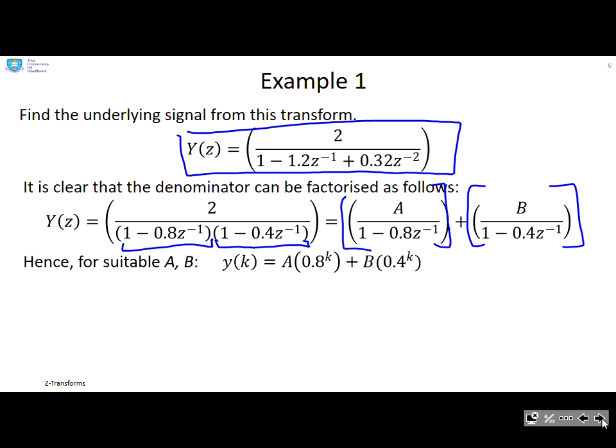Now, by inspection from the table, I can write that y(k) is going to be capital A times 0.8 to the power of k, plus capital B times 0.4 to the power of k.